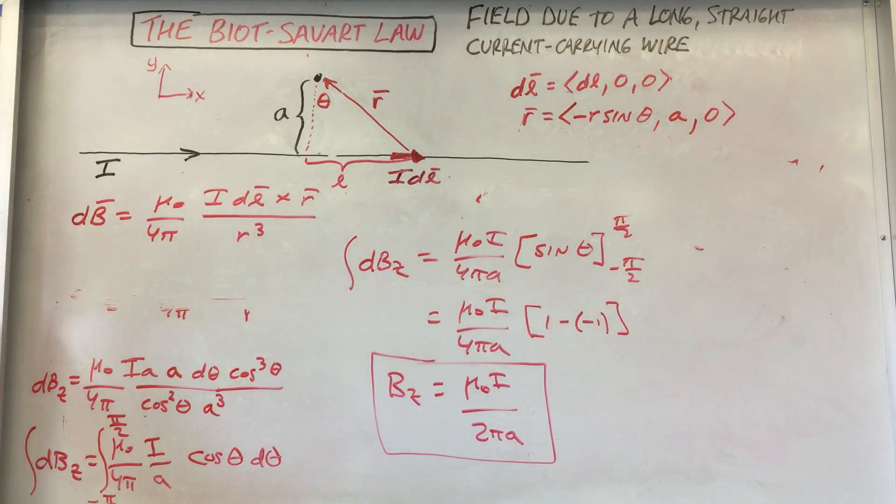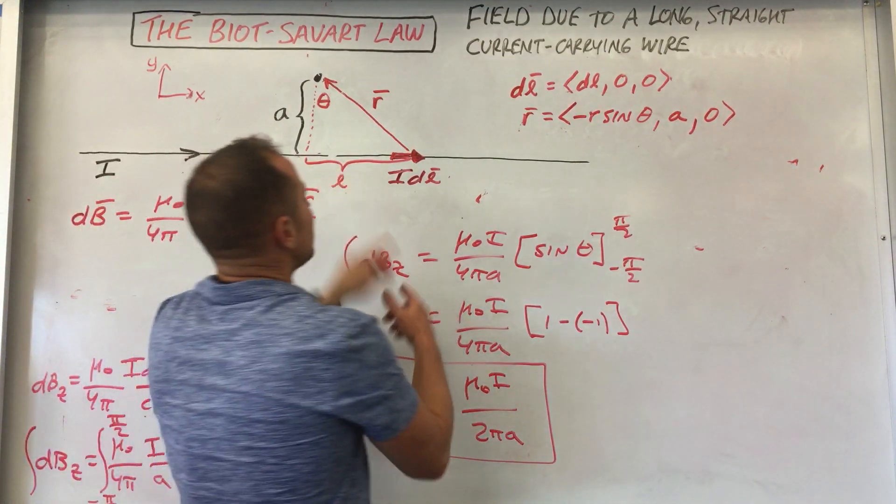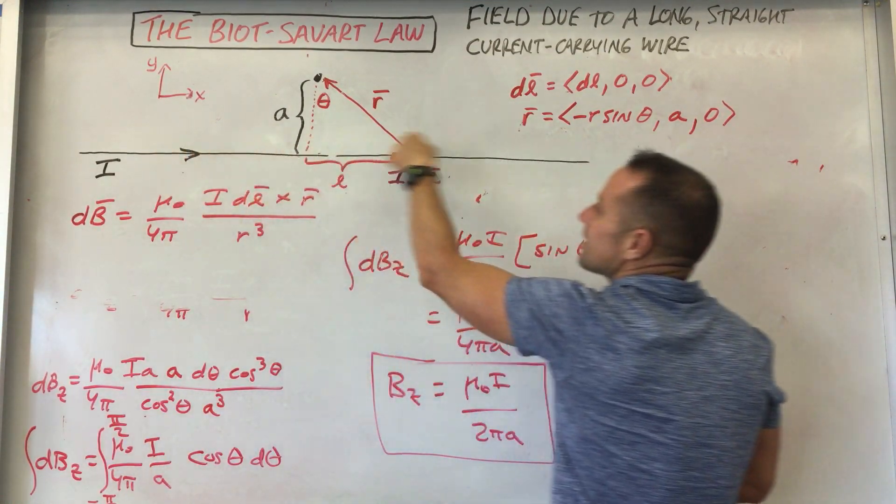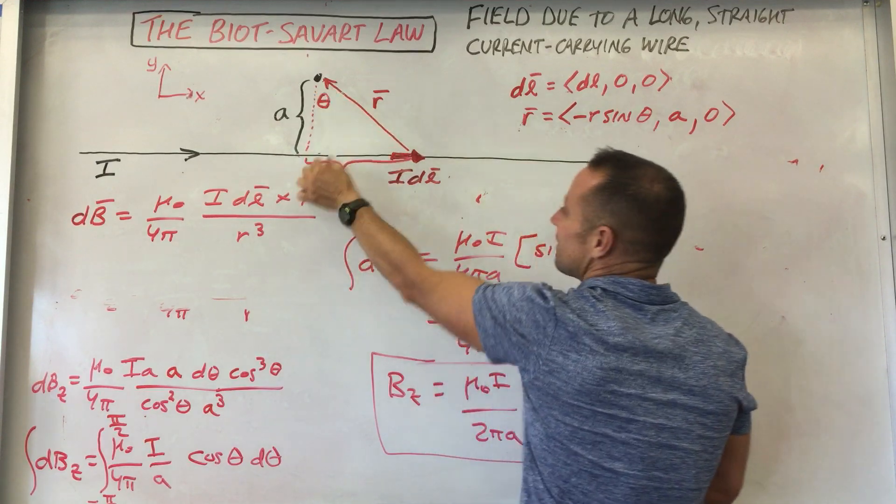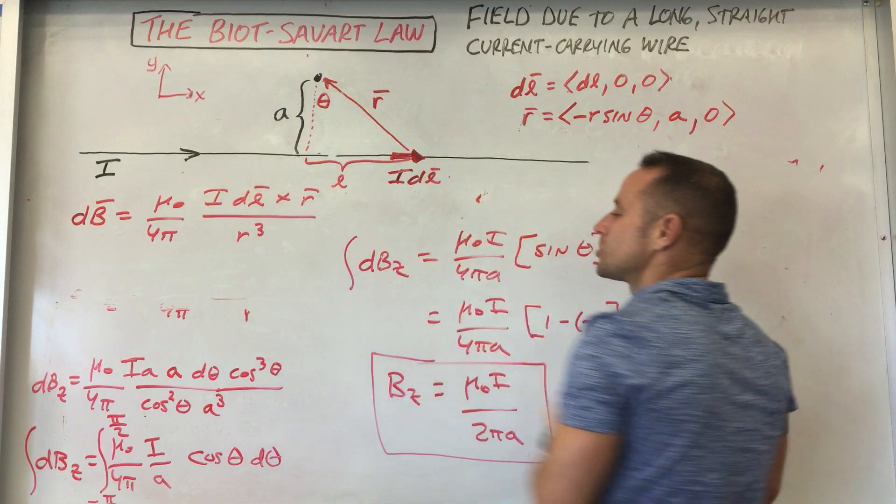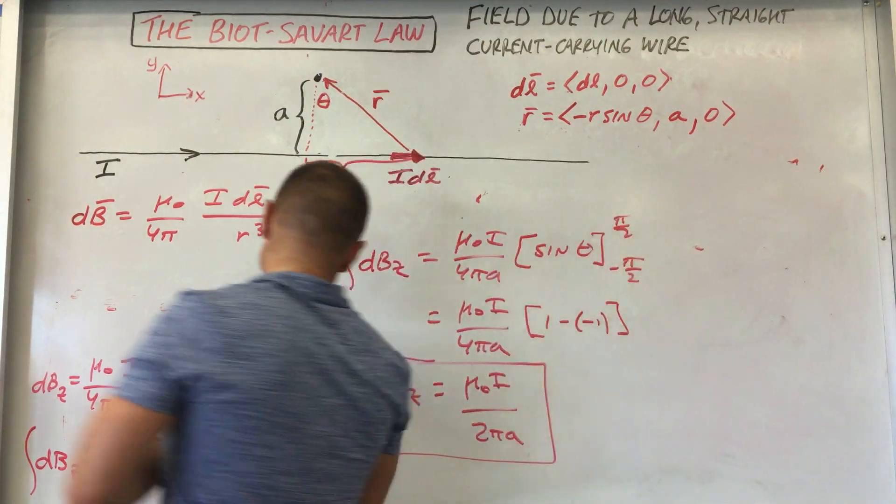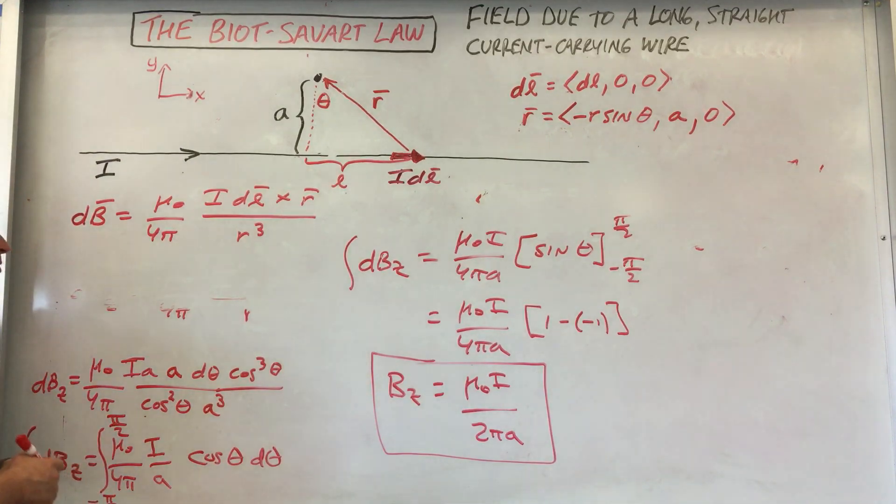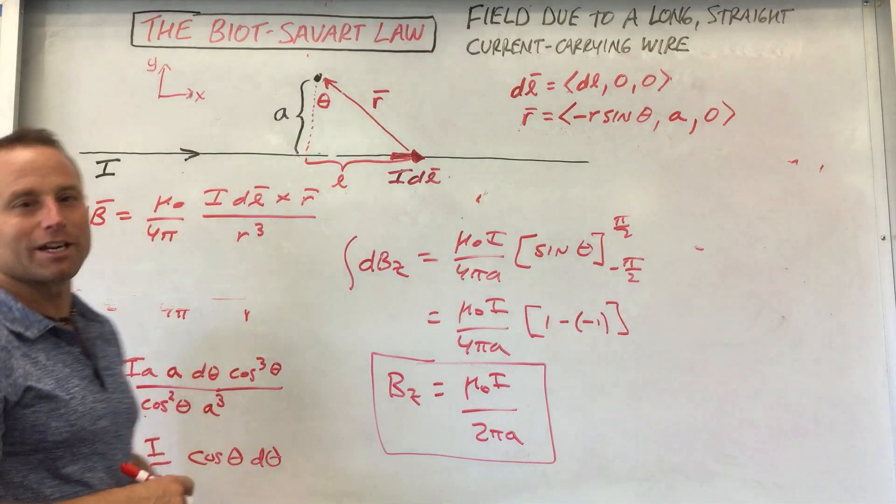Okay, so that's using the Biot-Savart law. Again, the thing that made this one a little bit tough was many things were changing, right? The angle's changing, the l variable's changing as you walk along the wire, the value of r is changing. So this is a tough one. In practice, ones that you will tend to work on in class, usually you can find one or two things at least that are staying constant. But here pretty much everything was changing.